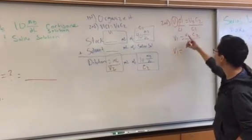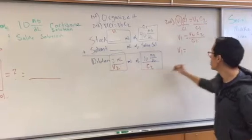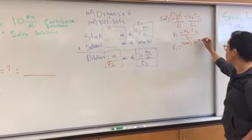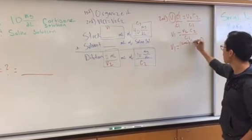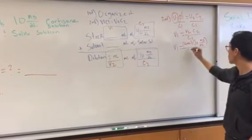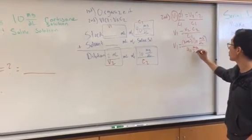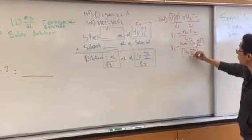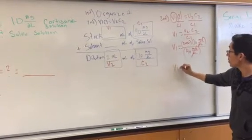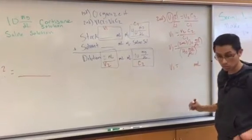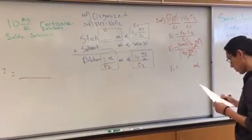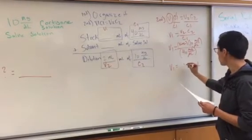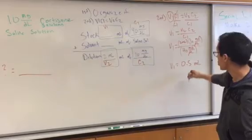V1 again equals, what is our V2? 2 milliliters. What is our C2? 10 milligrams over 1 deciliter over our C1, 40 milligrams over 1 deciliter. Our deciliters cancel out, and what's left is our milliliters. So once we do that, we will get 0.5 milliliters.